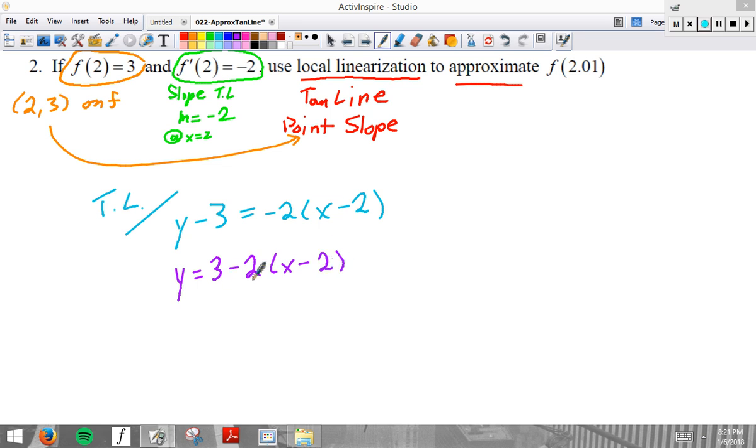Order of operations, don't subtract 3 minus 2. Please be careful with your algebra. So, if that's the y of the line, f of 2.01 is approximately 3 minus 2 times 2.01 minus 2.